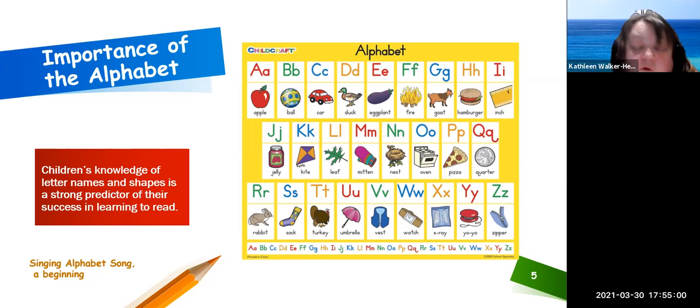Children appear to acquire alphabetic knowledge in a sequence that begins with letter names, then letter shapes, and finally letter sounds. Children learn letter names by singing songs such as the alphabet song and by reciting rhymes. Stop the video and have your child sing or recite the alphabet. See how many letters they can identify as they explore the transparency letters and numbers.